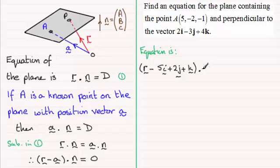And then this is dotted with the normal to the plane, so that's going to be 2i, then minus 3j plus 4k, and that is going to equal 0. So nice and quick there for the equation of the plane.